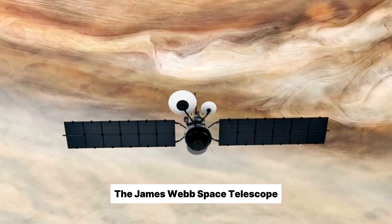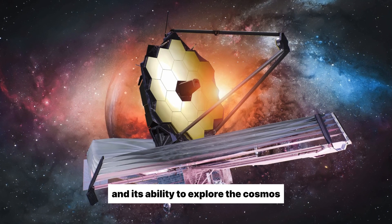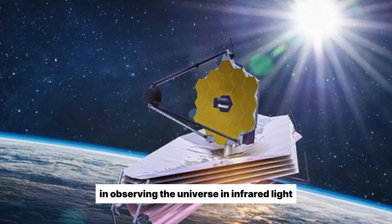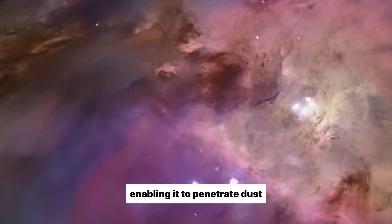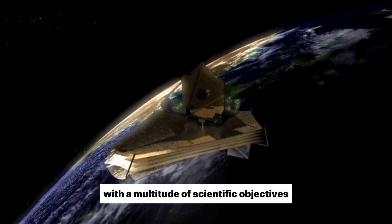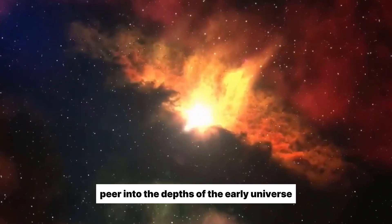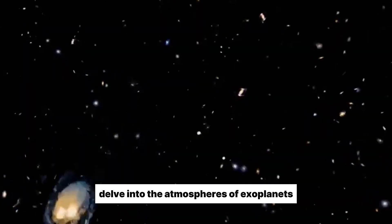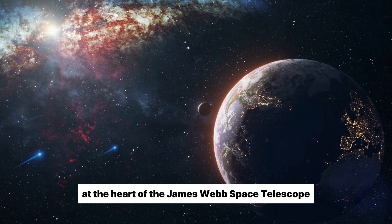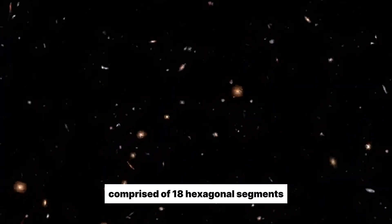The James Webb Space Telescope, JWST, is an astronomical marvel, designed to surpass its predecessor, the Hubble Space Telescope, in its ability to explore the cosmos. What sets the JWST apart is its remarkable proficiency in observing the universe in infrared light, enabling it to penetrate dust and capture the faintest and most distant celestial objects that were previously beyond the reach of other telescopes. With a multitude of scientific objectives, the JWST aims to unravel the mysterious formation and evolution of galaxies, peer into the depths of the early universe, delve into the atmospheres of exoplanets, and investigate the intricate processes behind star and planetary system formation. At the heart of the James Webb Space Telescope lies its most striking feature, a colossal primary mirror measuring 6.5 meters, 21 feet, in diameter, comprised of 18 hexagonal segments.